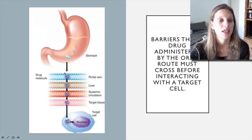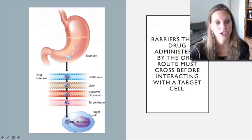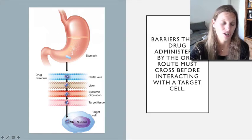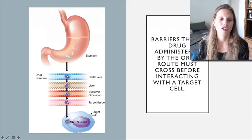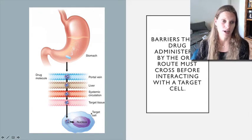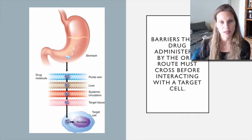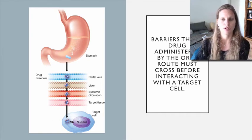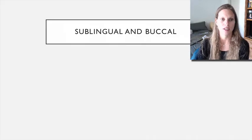Most drugs move from the stomach into the small intestine, leave the small intestine into the portal circulatory system, get into the portal vein, go through the liver, enter general circulation, reach the target tissue, and then affect the cell. There are a lot of barriers. A big part of unit three will cover all these variables as we think about how drugs move through the body and what the body does to the drugs.